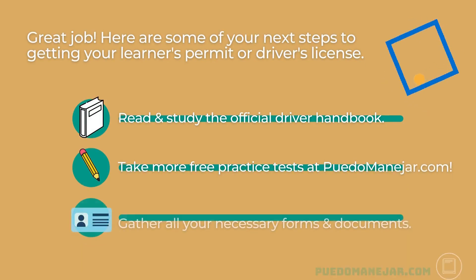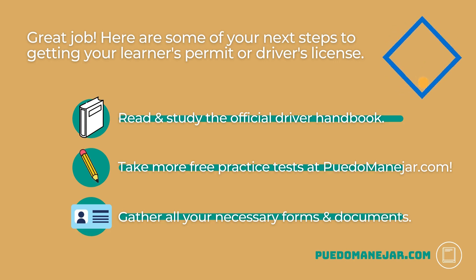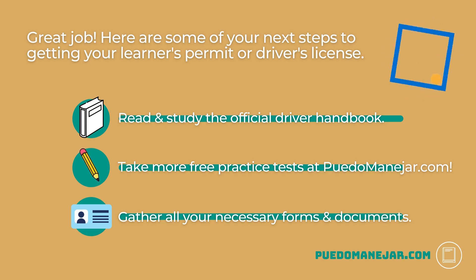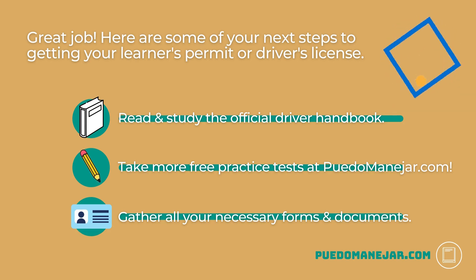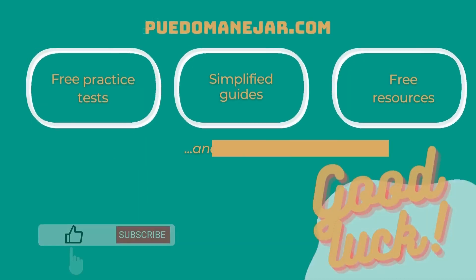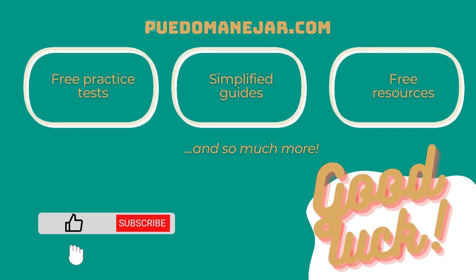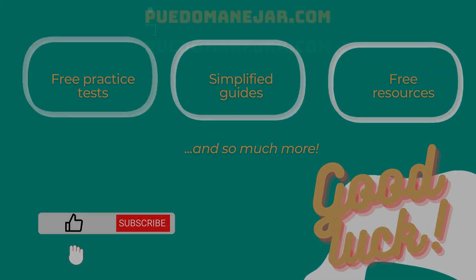Great job! Here are some of your next steps to getting your learner's permit or driver's license: Read and study the official driver handbook from your state DMV. Take more free practice tests at the website. Gather all necessary forms and documents before you visit the DMV office. Before you know it, you'll be driving in your very own car all by yourself.